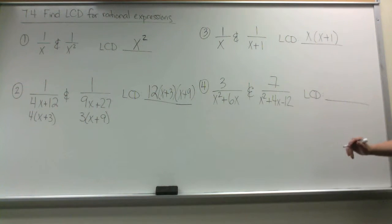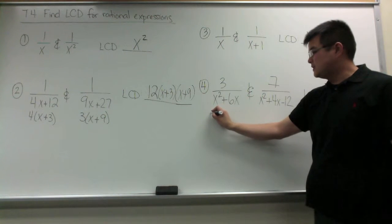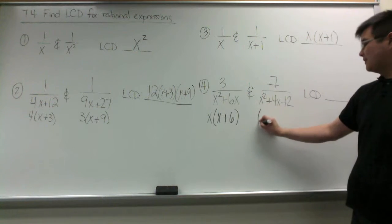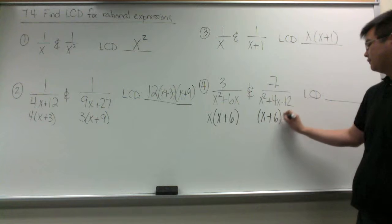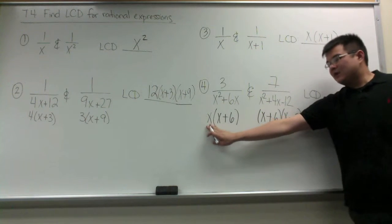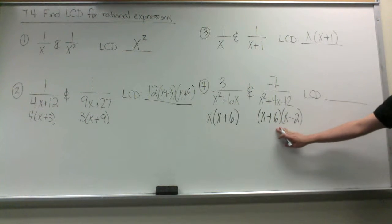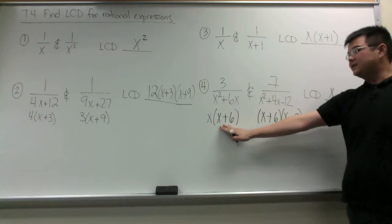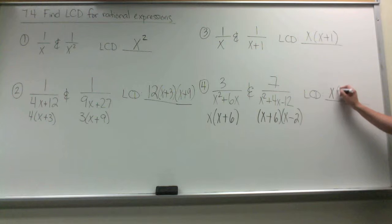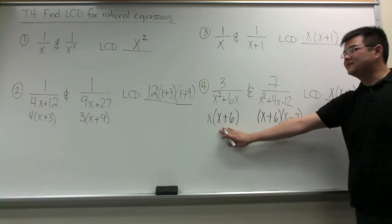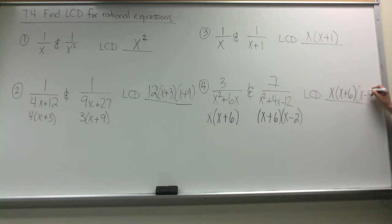In our last example we have to factor, as we did in example 2. We are going to factor out the GCF, which is x. Then we are going to factor the basic trinomial. We have a monomial x here, and since there is no monomial in the other denominator, we automatically include it in the LCD. These two binomials are the same, so we keep that binomial with the highest exponent, raised to the first power. The binomial x minus 2 is not in the other fraction, so it automatically goes as part of the LCD.